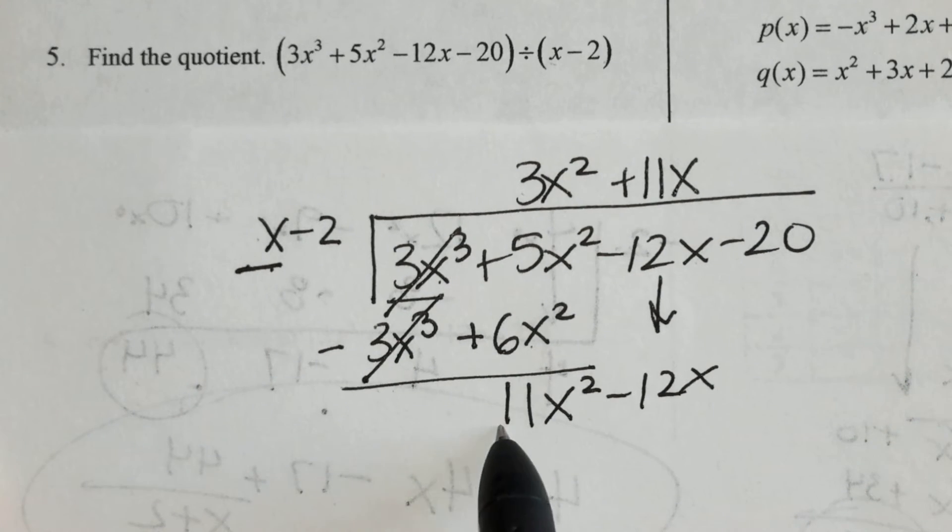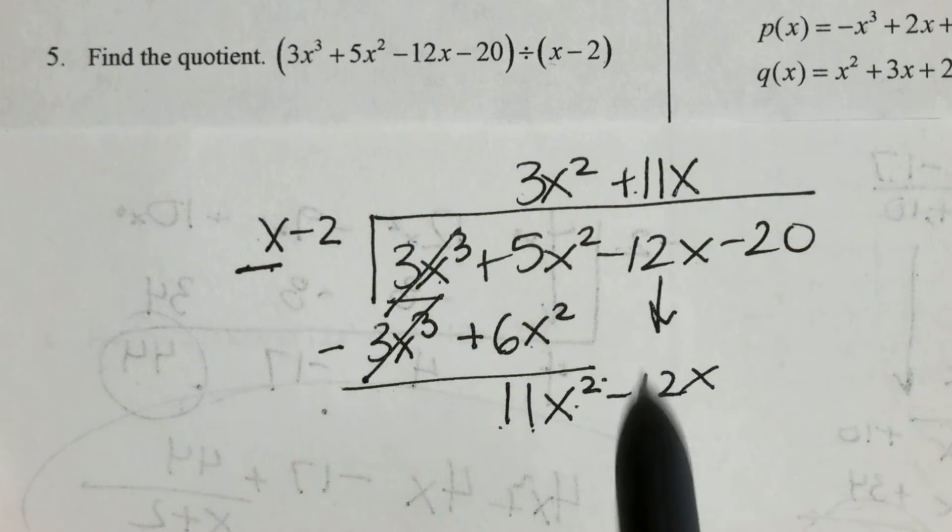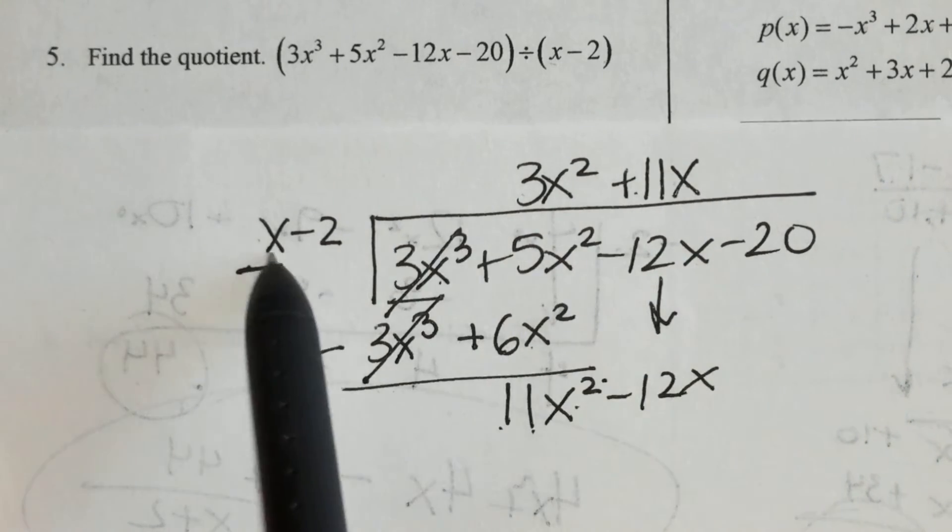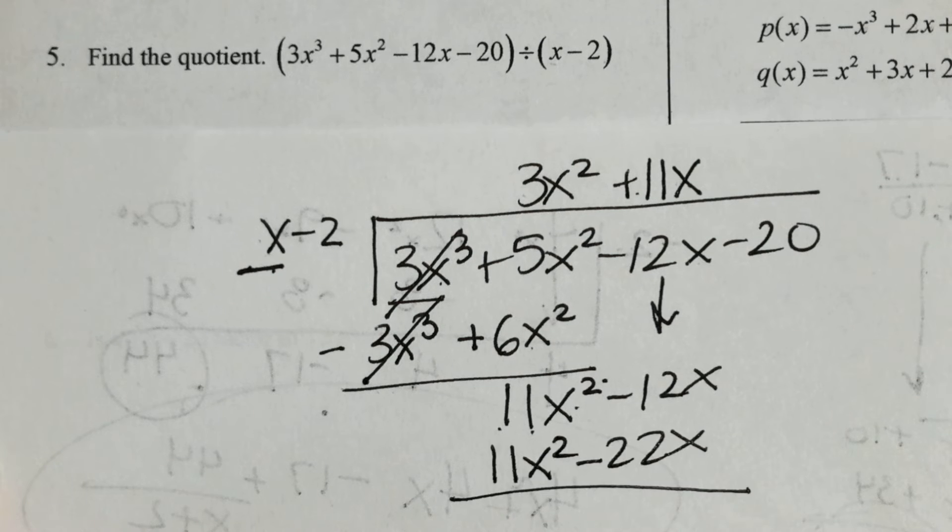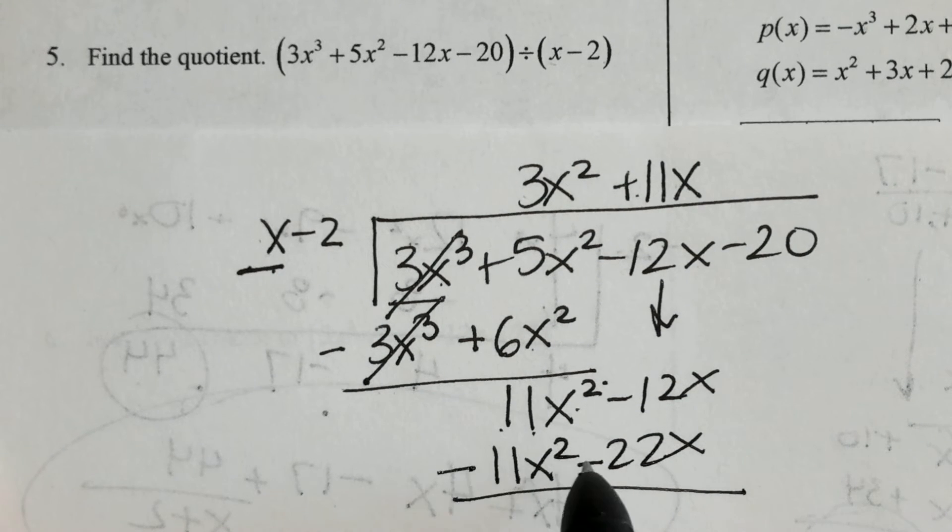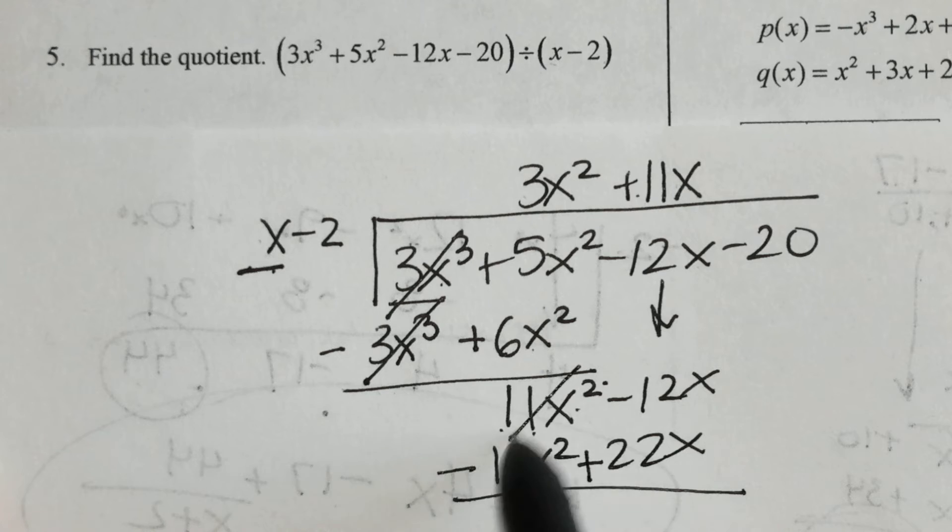x times what is 11x squared? The answer is 11x. Again, it's in the x column. I'm going to distribute now to the 1st and the 2nd. Change the sign of everything in the 2nd row. And add straight down.